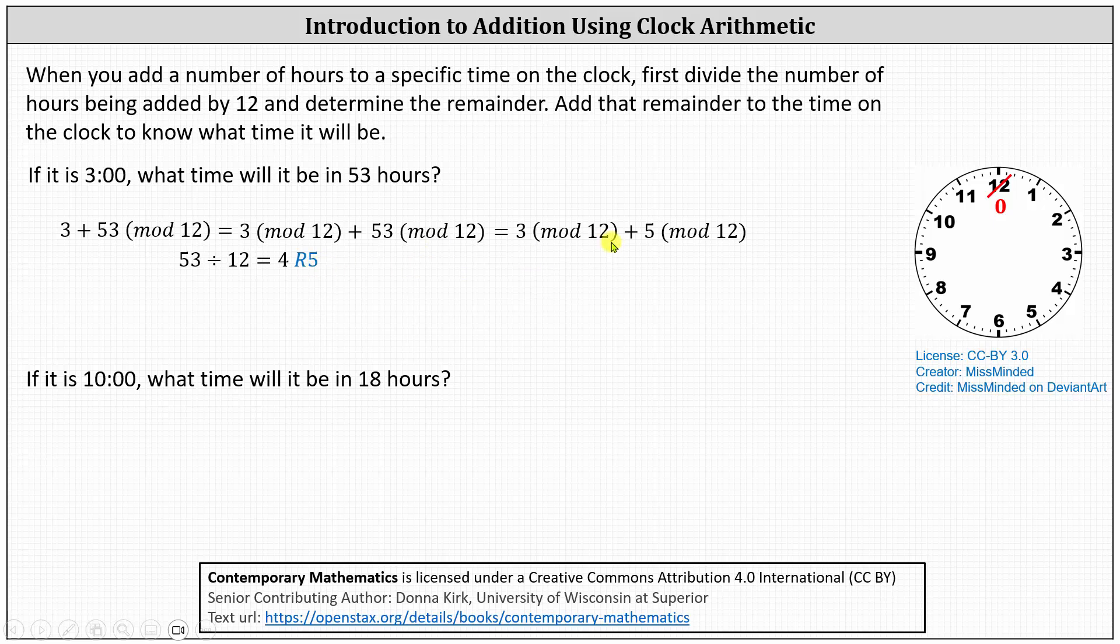53 mod 12 is equal to the remainder when 53 is divided by 12, which is 5, which gives us 3 mod 12 plus 5 mod 12, which is 8 mod 12, which is 8, since 8 is less than 12, and therefore, it is 8 o'clock.